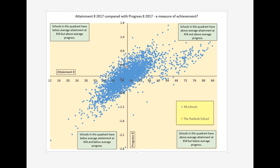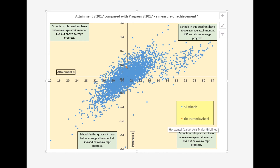The third chart plots attainment against progress, a useful indicator of overall achievement. In this school, attainment is marginally below the national average, although as we've seen, progress is well above. Schools in the right-hand quadrant have both high attainment and high progress, whereas those in the bottom right have high attainment compared with national, but below average levels of progress.